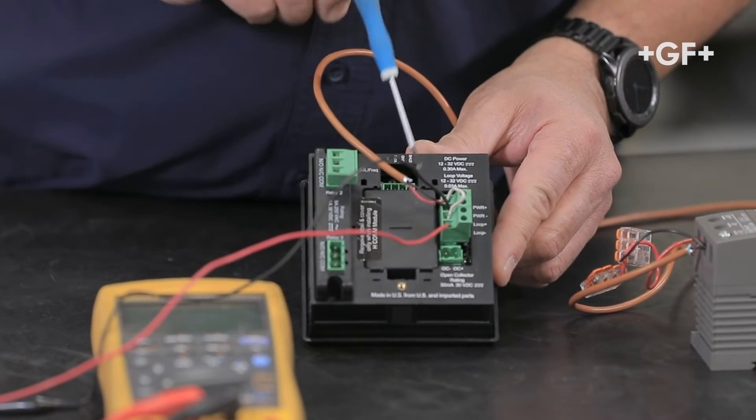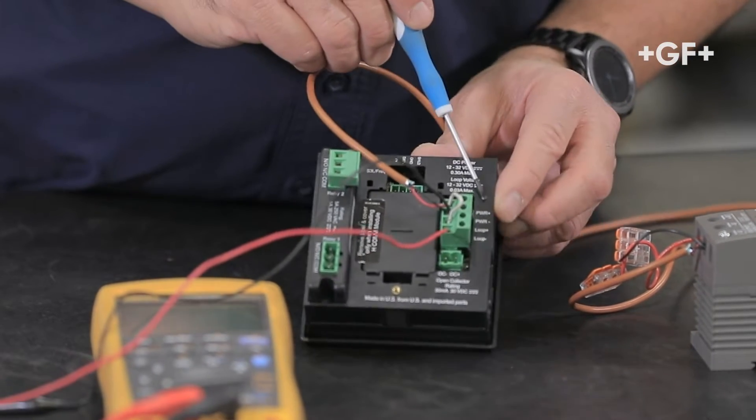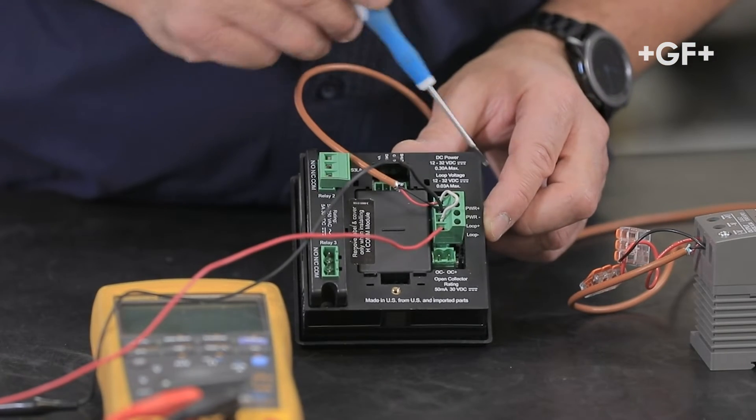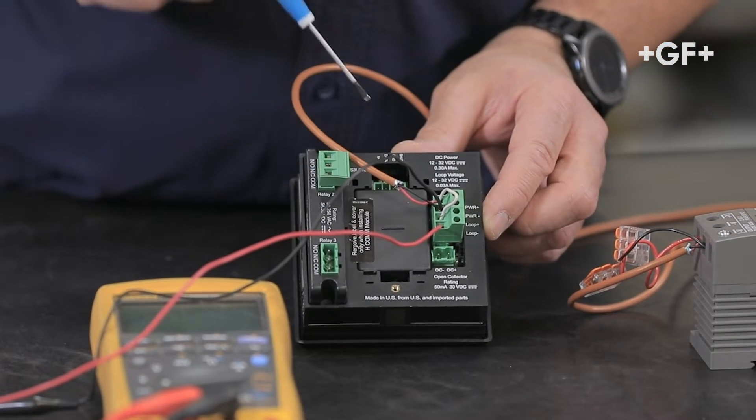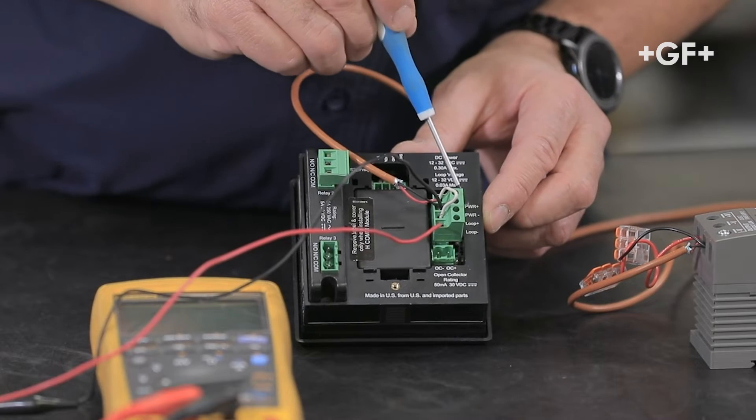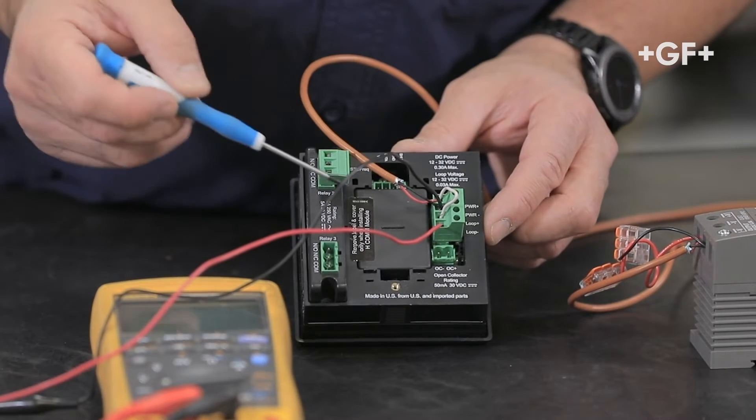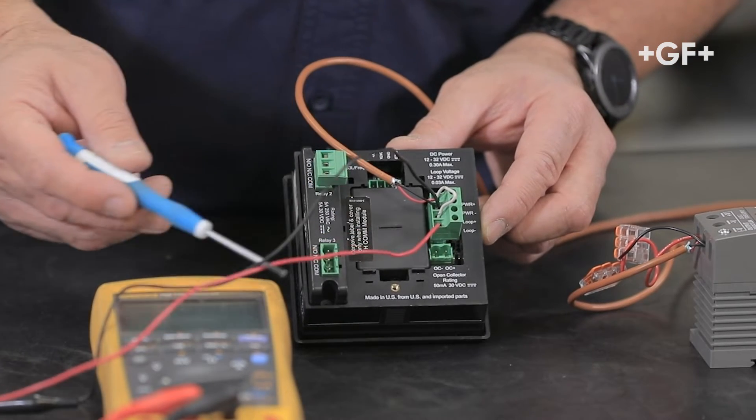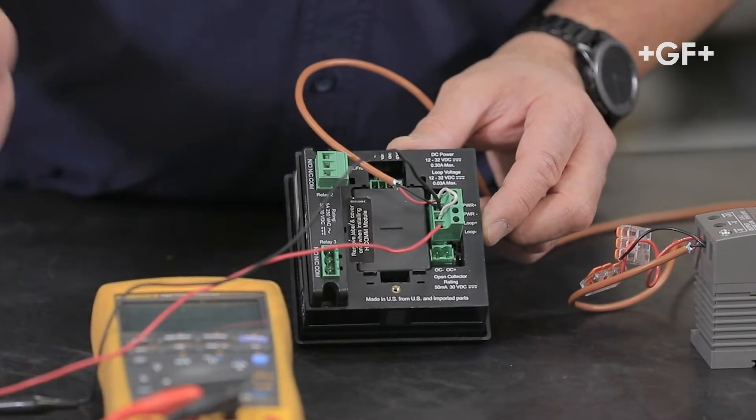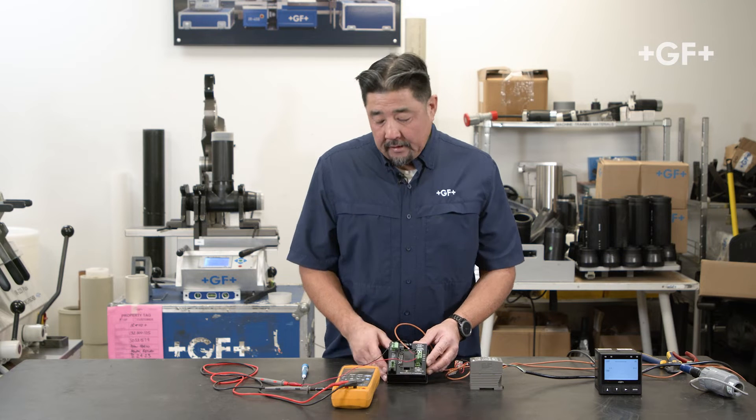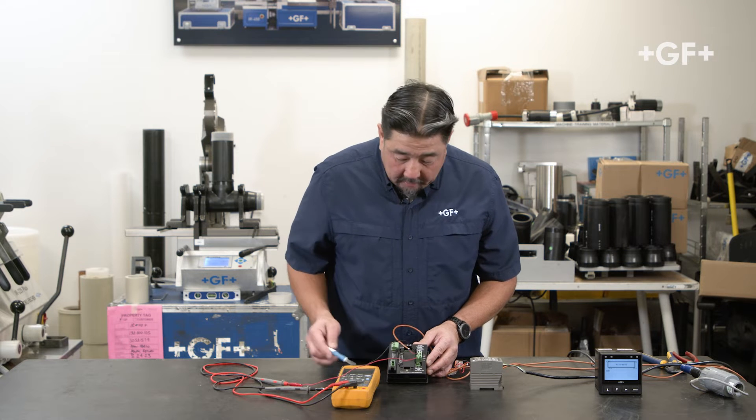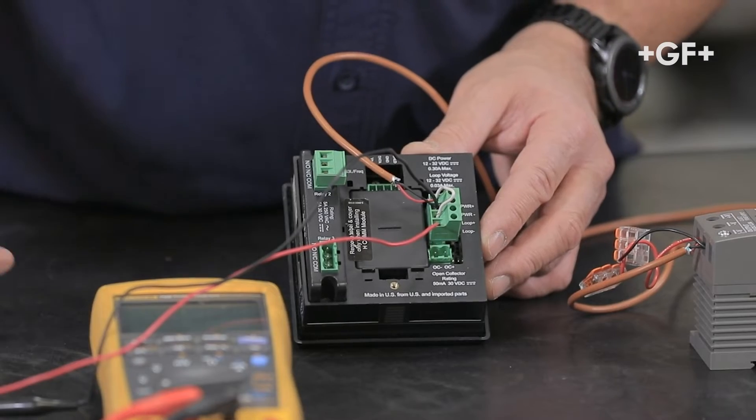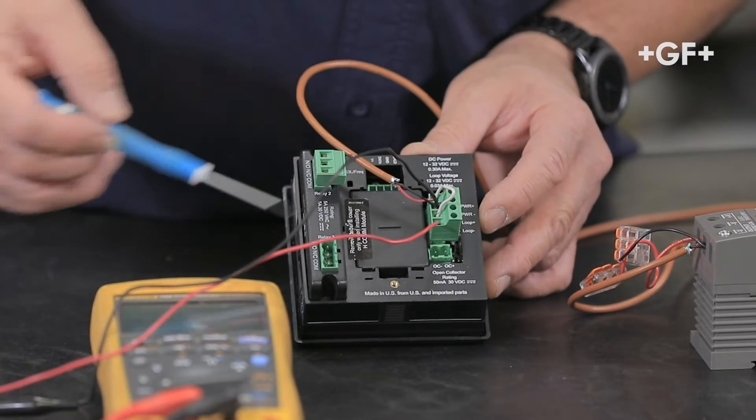24 volt positive coming into power plus, it's jumpered over to loop plus. I have zero volts to power minus. And as my signal lead I have that wired into loop minus going into the multimeter. This could be a chemical feed pump, chart recorder, data logger, any of those other 4-20 data collection devices. And then I have the ground ran back to power minus.